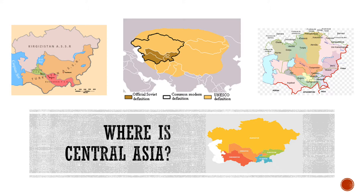The titular ethnic identities that we're used to seeing as the major Republic identities were only created in the 1930s when they were given that status by the Soviet Union. Prior to this point, while these groups did exist in the region, they were hardly the only or major groups in the areas where they were eventually given their leadership. This was largely done by the Soviet Union in order to undercut various nationalist movements within Central Asia.